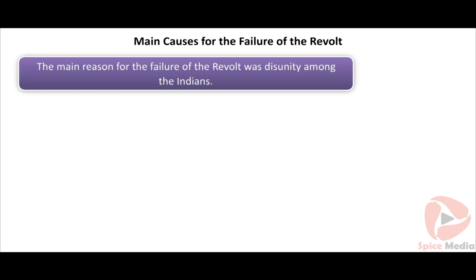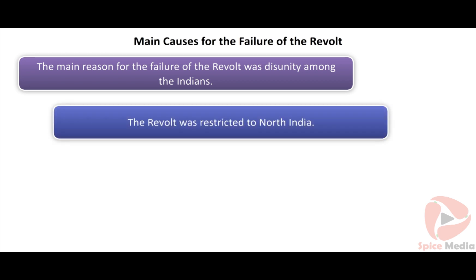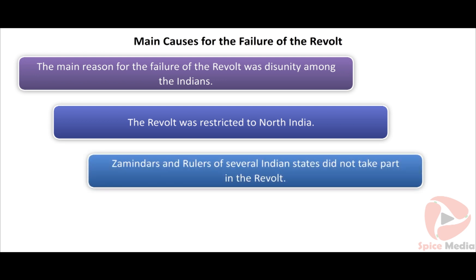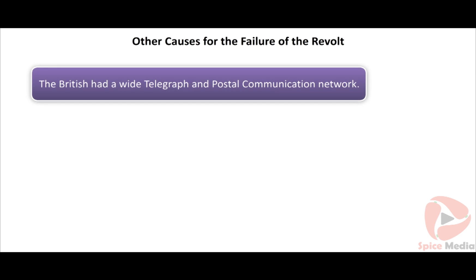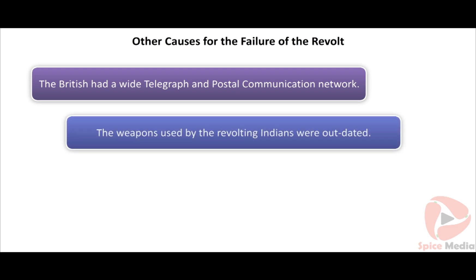Main causes for the failure of the revolt: The main reason was disunity among the Indians. The revolt was restricted to North India — Punjab, Sindh, Rajasthan, and regions in South India did not participate. Zamindars and rulers of several Indian states did not take part and remained neutral. Educated Indians did not support the revolt. The British had a wide telegraph and postal communication network, enabling them to get immediate information of any uprising and swiftly send forces to suppress it. The weapons used by revolting Indians were outdated and no match for the modern weapons used by the British.